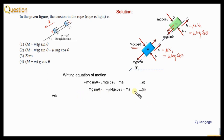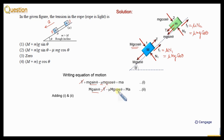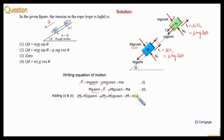Now we can add these two equations. T and T will cancel. Taking g sinθ as common, we get (M + m)g sinθ. Taking μg cosθ as common, we get μ(M + m)g cosθ. On the right-hand side, we have (M + m)a. Since (M + m) is common throughout, it cancels, and we get the acceleration: a = g(sinθ − μcosθ).